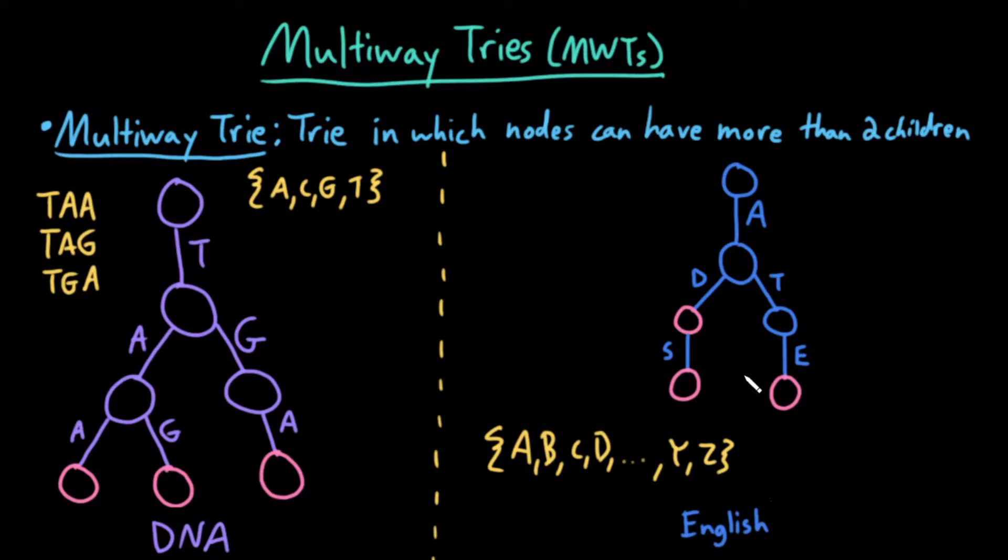What words are stored in this multi-way trie? Remember, every word is a path from the root to a word node. So my words are A, D, the word add. A, D, S, the word adds. And A, T, E, the word ate.